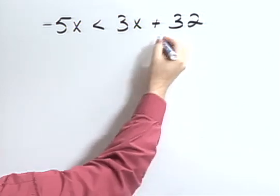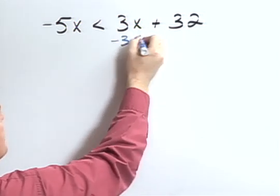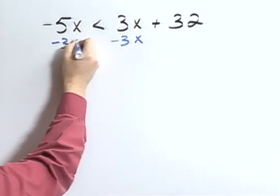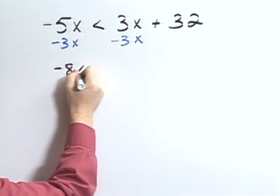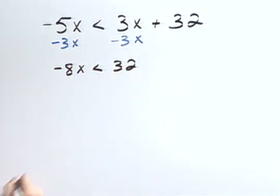I want to first subtract 3x from both sides so that I can get all my variables on one side. So negative 8x is less than 32.